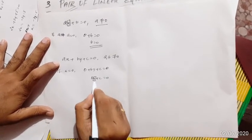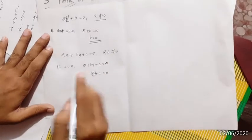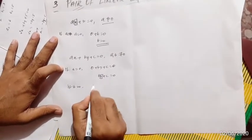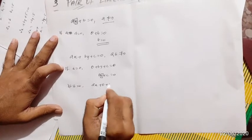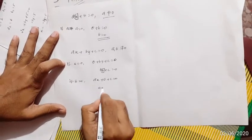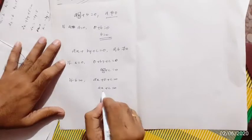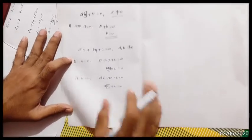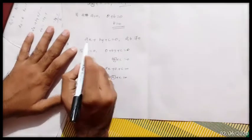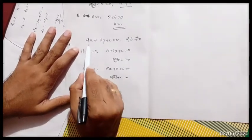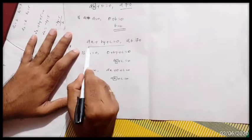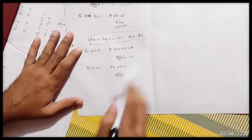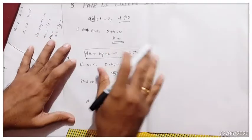Therefore b ≠ 0 is required. Similarly, if b = 0, we get ax + 0 + c = 0, that is ax + c = 0, which is a linear equation in only one variable, x. So the general form of a linear equation in two variables is ax + by + c = 0, where a and b are not equal to zero.